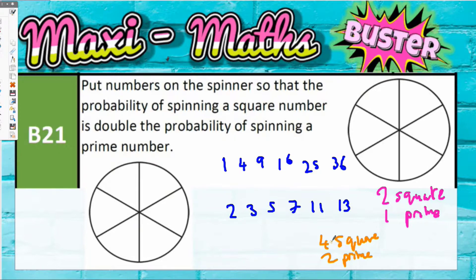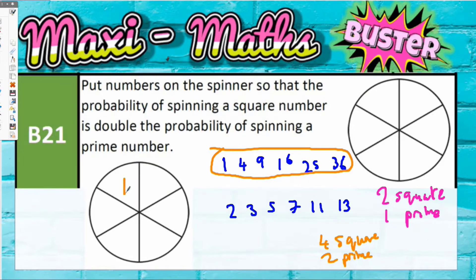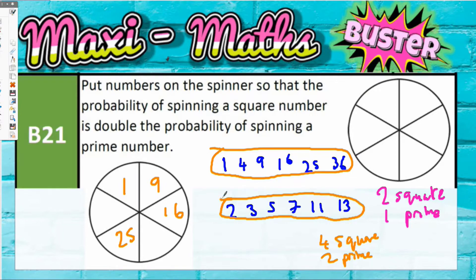We'll color code this. If we choose four square numbers, we could pick any four — let's say 1, 9, 16, and 25. Then we choose two prime numbers, any two from the list, so let's say 3 and 11. The probability of choosing a square would be 4 out of 6, and prime would be 2 out of 6, so 4 out of 6 is double 2 out of 6.